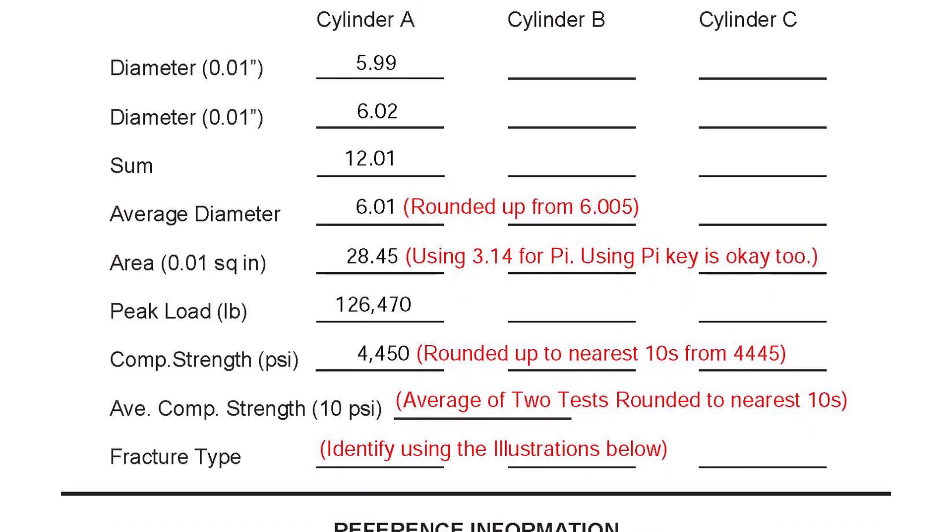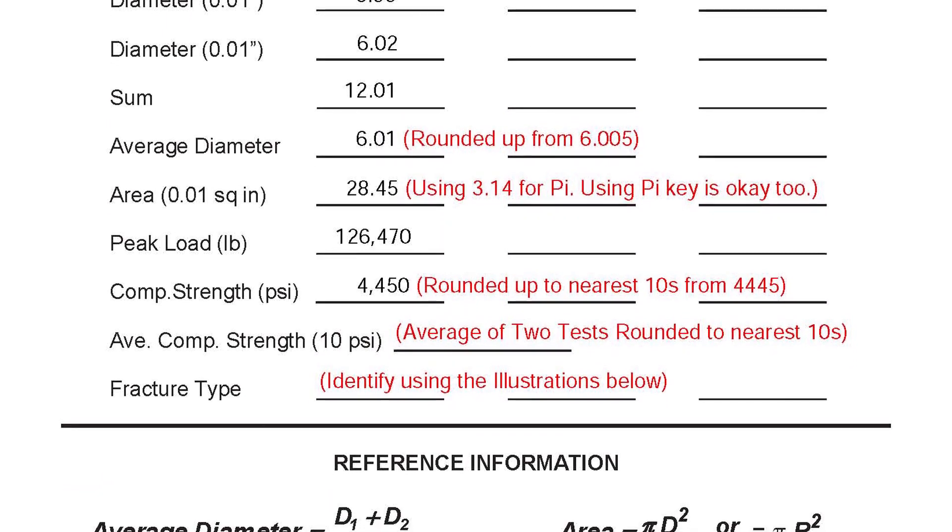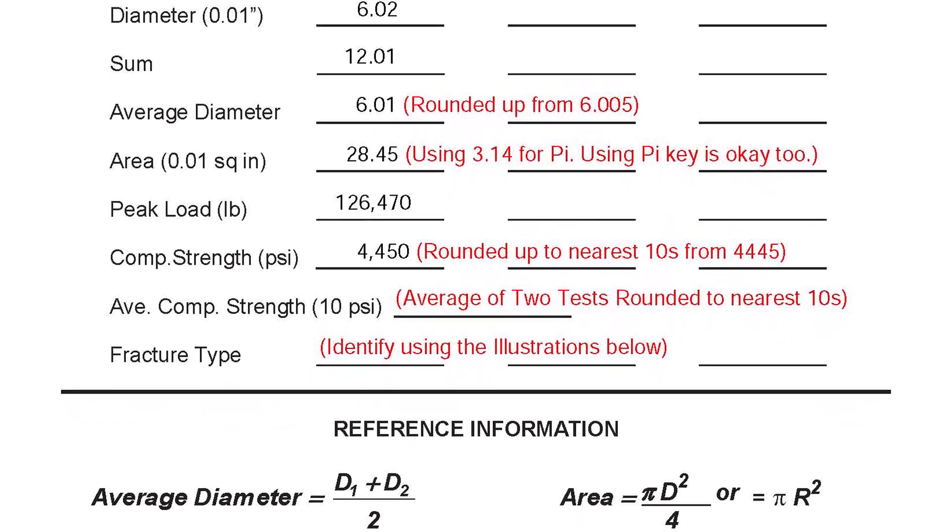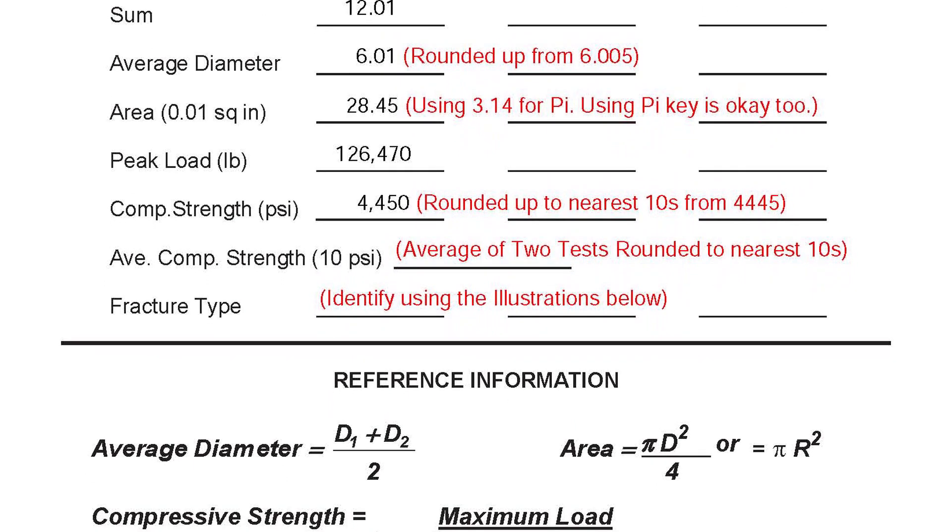Let's slide down a little bit and take a look at the area. The area equation is referenced for us down below as pi d squared over 4 or pi r squared. We encourage everyone to use pi d squared over 4 because it's just a little bit easier and a little less confusing. So the diameter is the place to start.